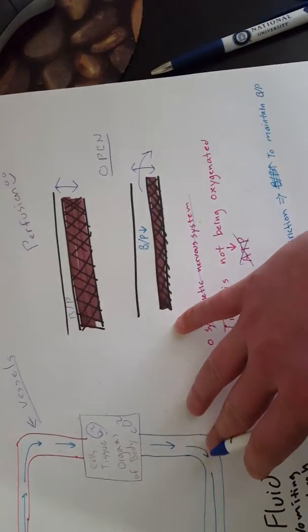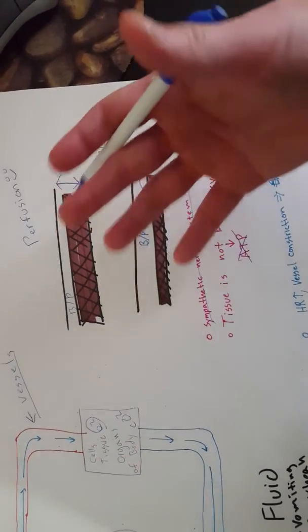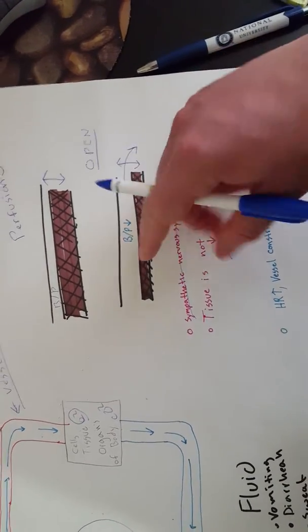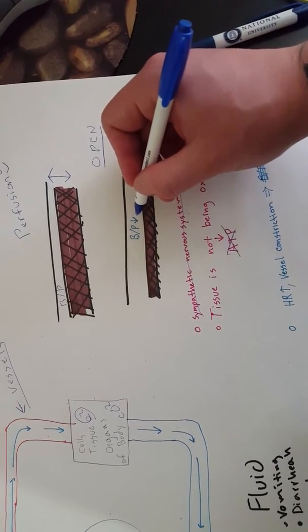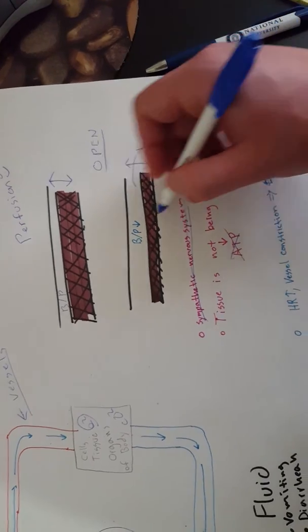Your body has mechanisms to protect you against this, at least for a little bit until it gets corrected. If your blood pressure goes down, your sympathetic nervous system kicks in and constricts your vessels.